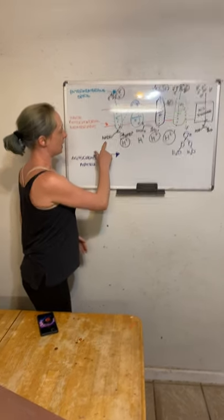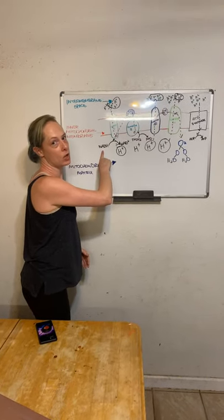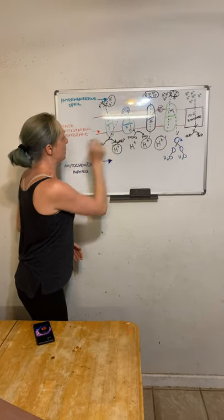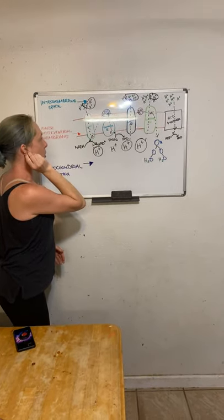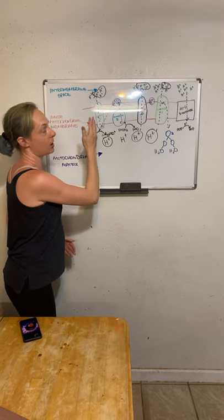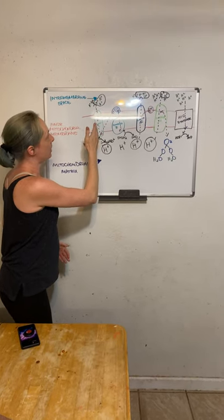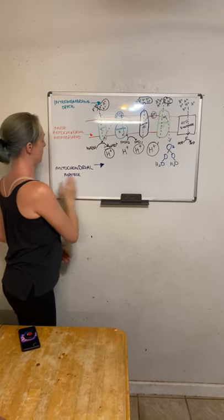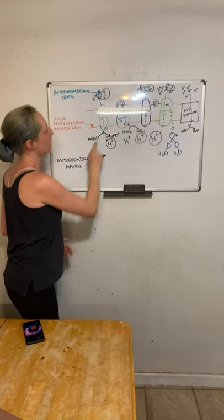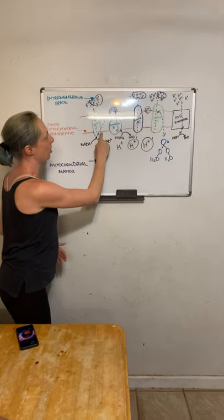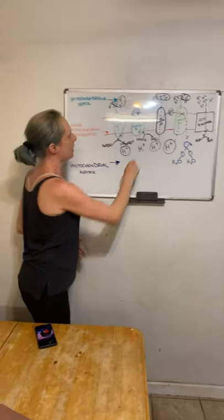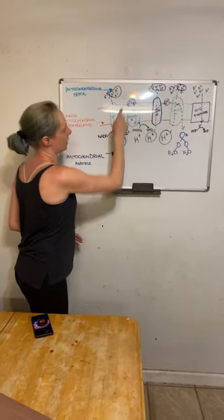We start with NADH, which was generated in the citric acid cycle, and that donates two electrons to complex 1. This supercharges complex 1, which is a proton pump. It is then able to pump protons from the mitochondrial matrix into the intermembrane space. The donated electrons go from complex 1 to coenzyme Q. Coenzyme Q holds onto those electrons.